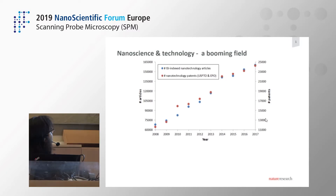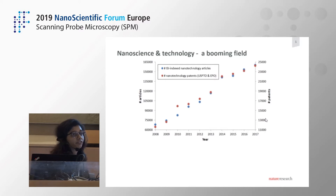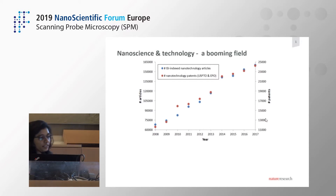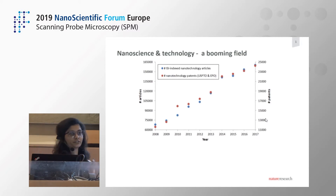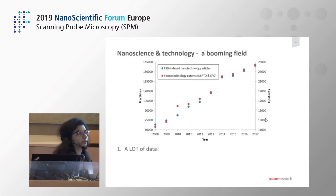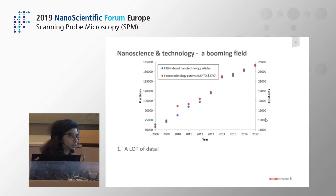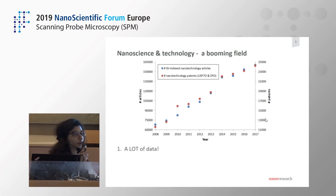As you probably already know, the field of nanoscience and technology is a booming field — it's ever-growing, as you can see in terms of patents and articles. This is good in the sense that it shows it's an exciting field. However, the other side of the coin is the challenges faced by researchers like you: there is a lot of data.